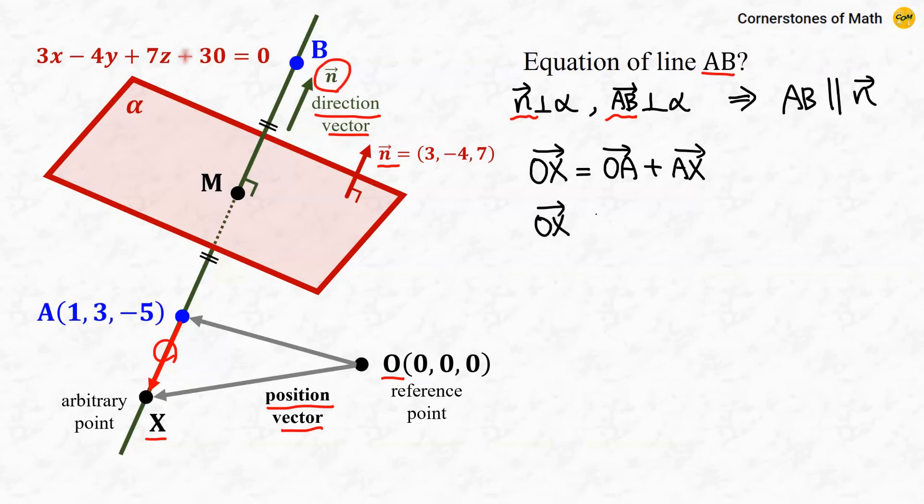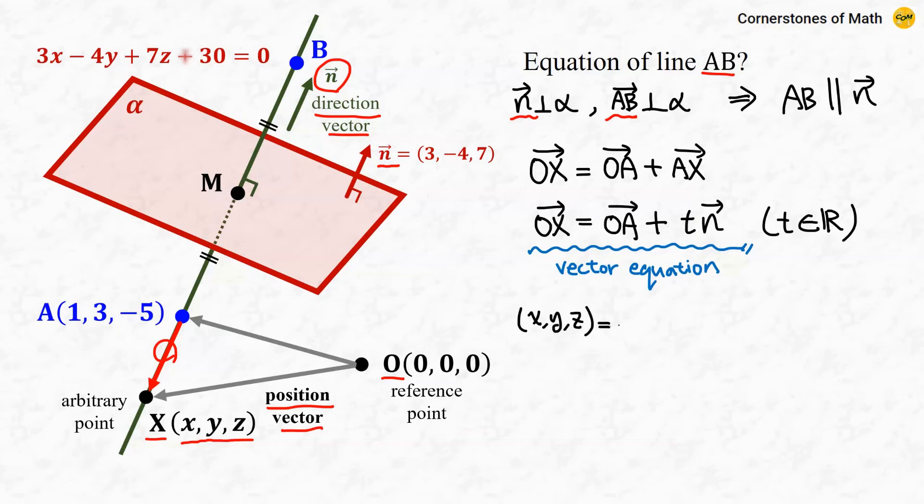we can say vector OX is vector OA plus T times vector N, where T is a real number. This is the vector equation of line AB. If we use coordinates with point X as (x, y, z), then (x, y, z) equals point A, so (1, 3, -5), plus T times vector N, so (3, -4, 7).